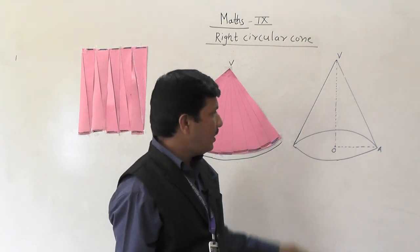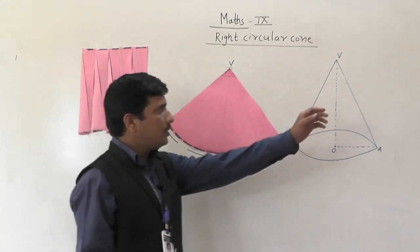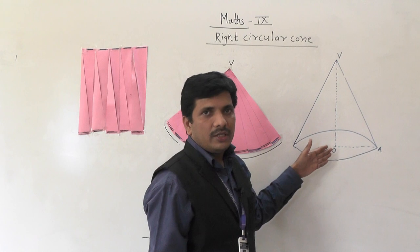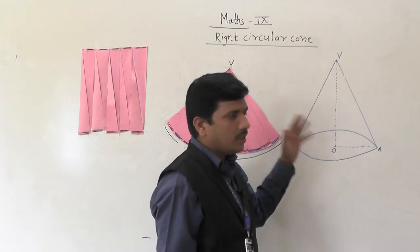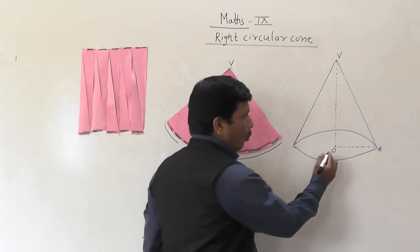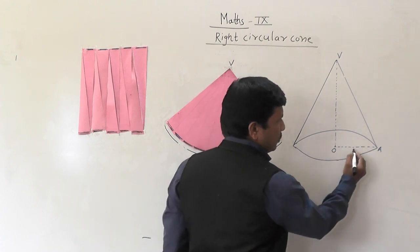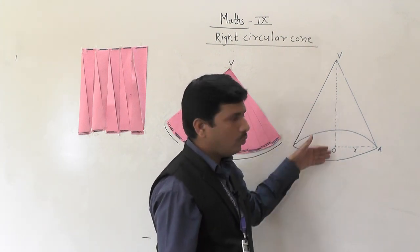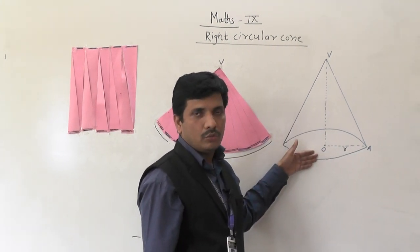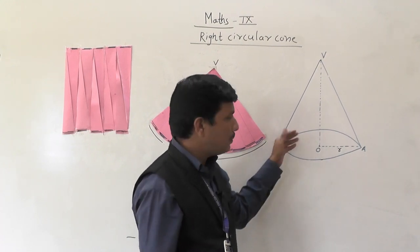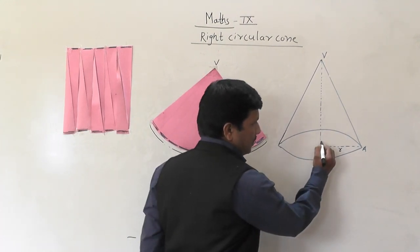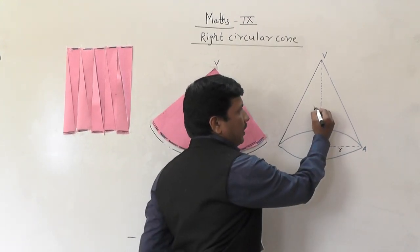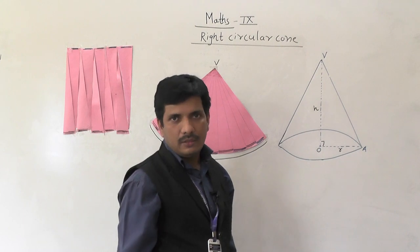First we will see why it is called a right circular cone. Here, VO is the vertical height of the circular cone. OA is the radius, which we denote by small r. OA is the radius and VO is the height of the circular cone, which is perpendicular to the base. VO is the height, the vertical height, so that is denoted by small h.